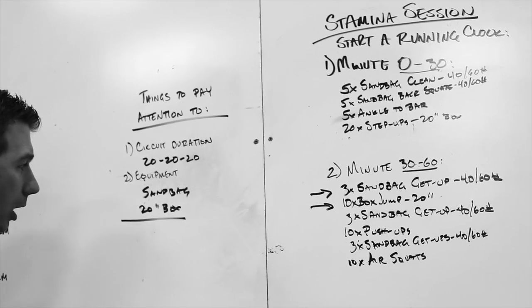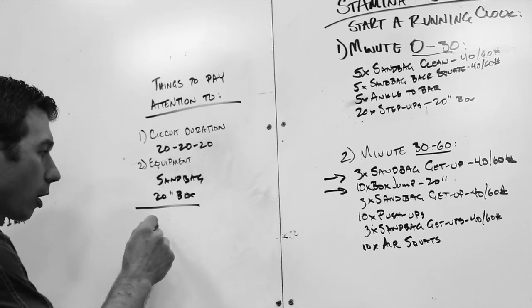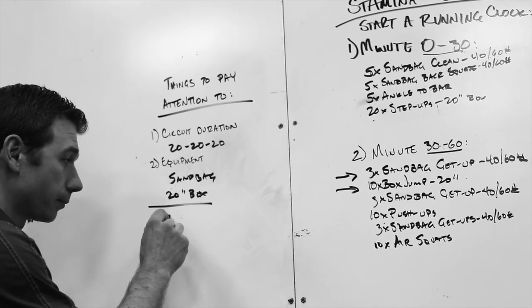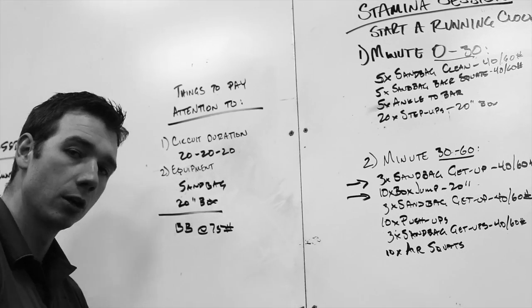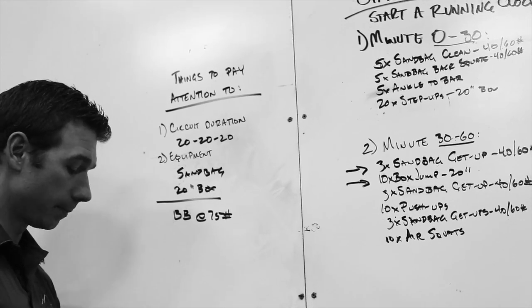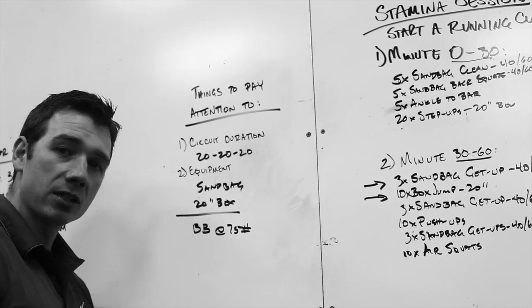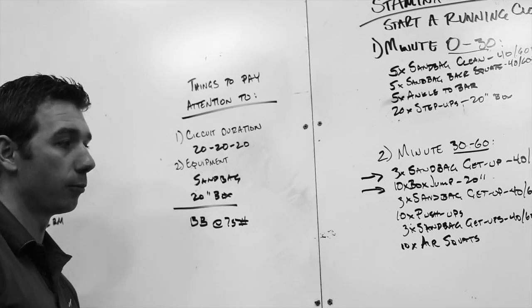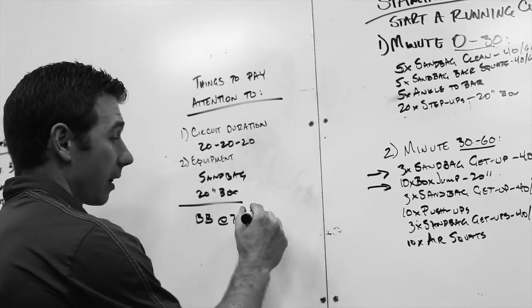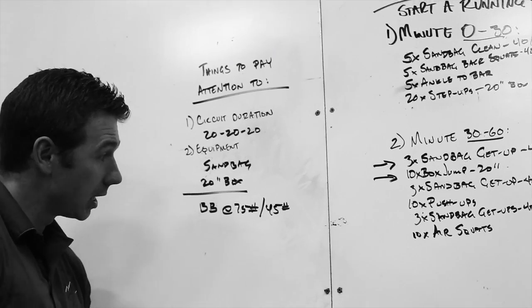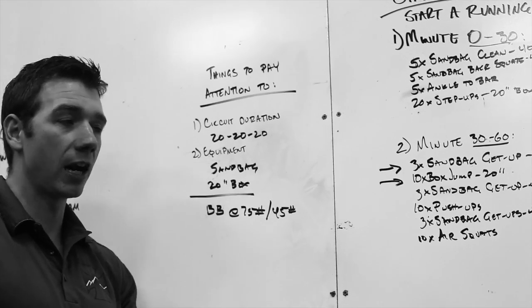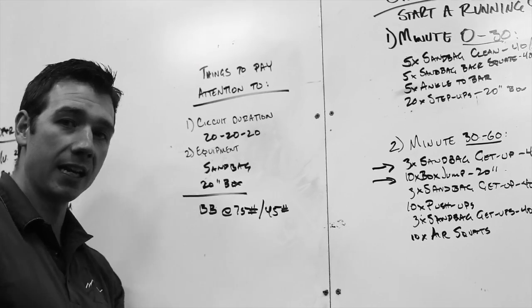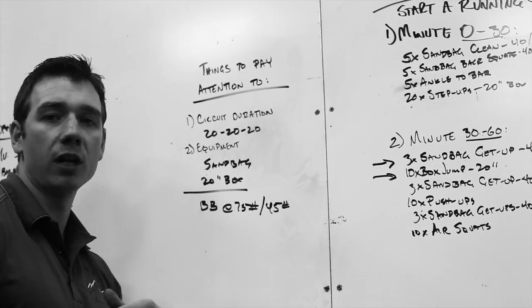Other types of equipment that we'll have you use is just a barbell loaded to a single weight. So something like a barbell at 75 pounds is a pretty popular weight that we like to use because you can do a lot of movements with that. You can do pretty much every movement with that weight, or at least for male athletes. For female athletes it would be 45 pounds.